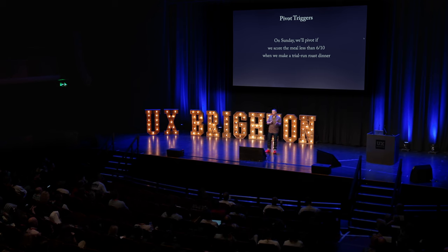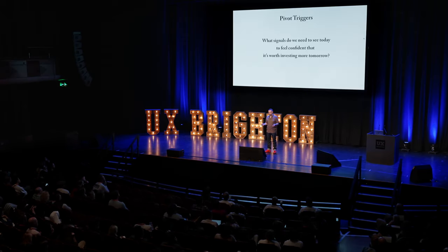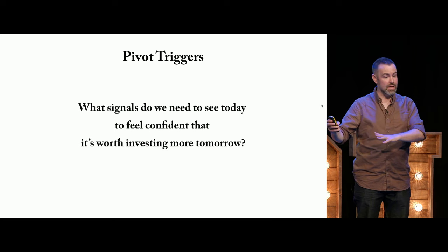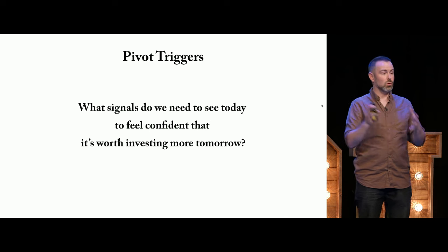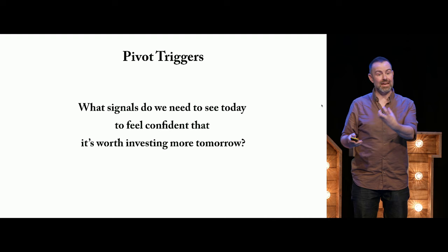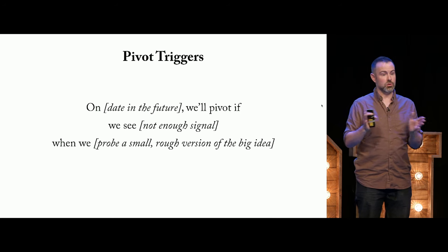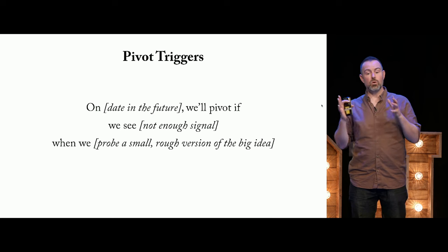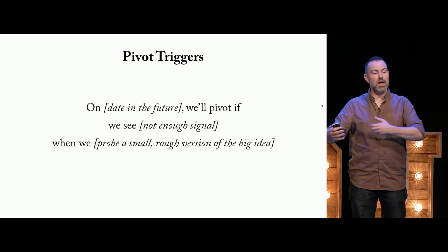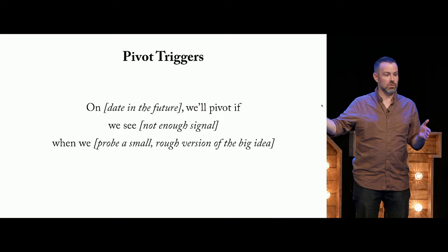We can share that with the whole family so they can debate: is 10 enough, or do we need 12 or 15? You can have that conversation now about what is just enough to move forwards. Similarly, technical pivot triggers: 'On Sunday we'll pivot if we score the meal less than six out of ten when we make a trial run roast dinner.' If we burn the potatoes, maybe we get a caterer. We're asking: what signals do we need to see today to feel confident it's worth investing more tomorrow?